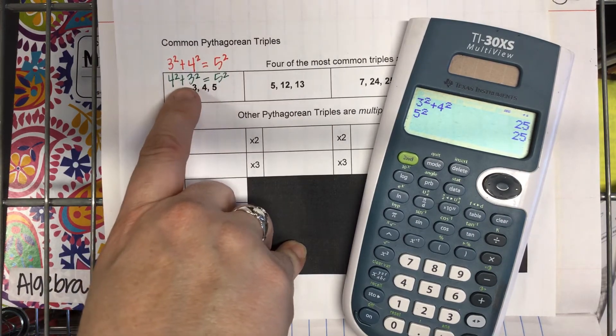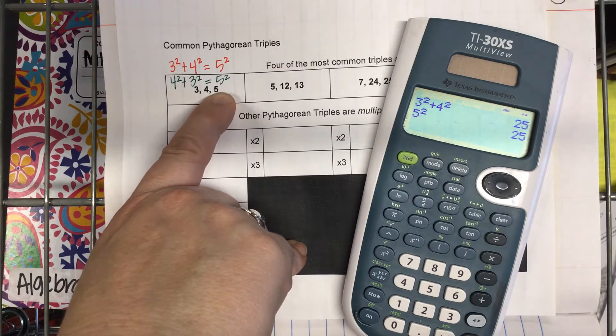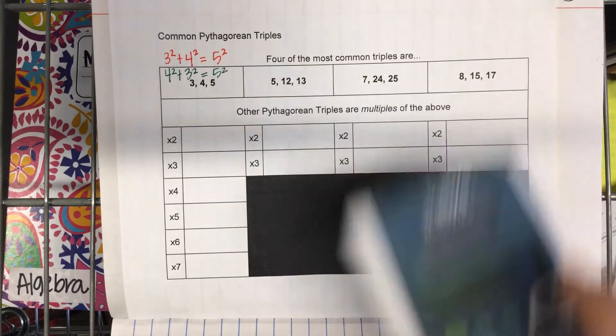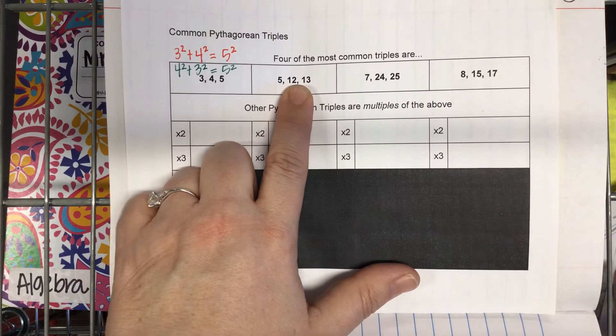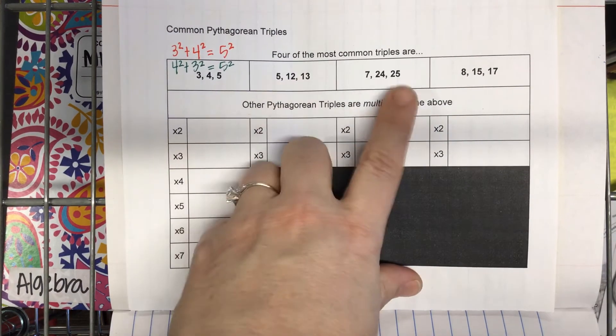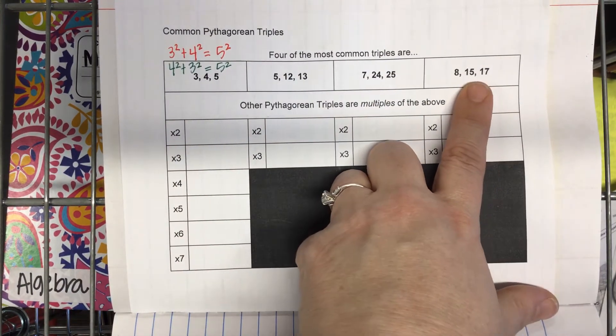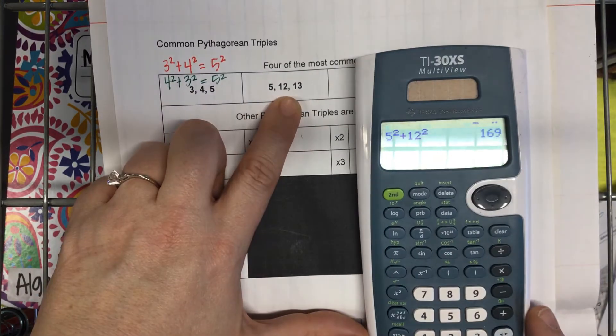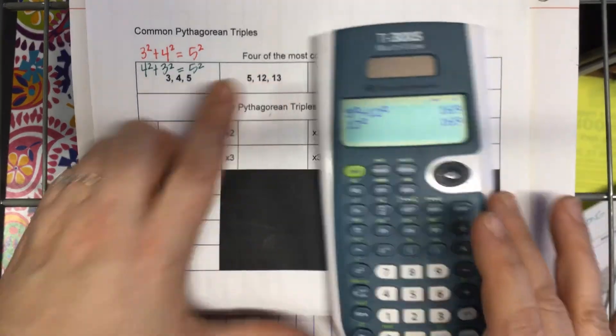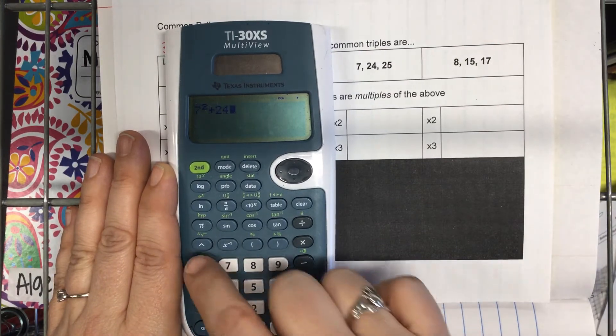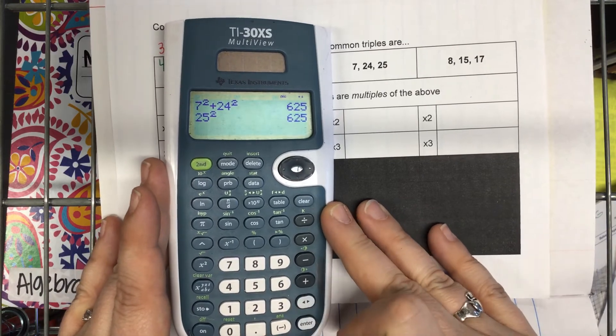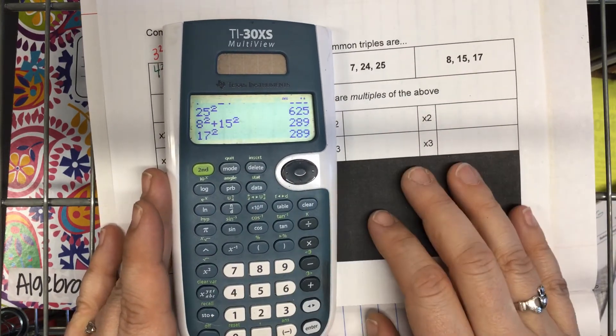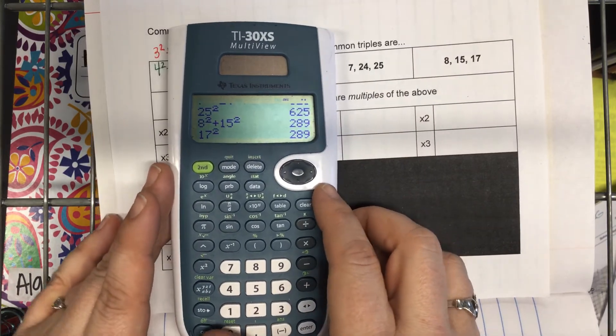The biggest of the three numbers has to go in for C. But you can also just start recognizing that if you see the numbers three, four, and five, yes, it is going to be a right triangle because it is a Pythagorean triple. Most common one right here. Another Pythagorean triple would be five, twelve, thirteen. Pretty common. Seven, twenty-four, twenty-five, and eight, fifteen, seventeen. All of these work. I can prove it to you. Five squared plus twelve squared equals thirteen squared. Seven squared plus twenty-four squared equals twenty-five squared. Eight squared plus fifteen squared equals seventeen squared. Because they have the same solution, right? This is all we did yesterday.